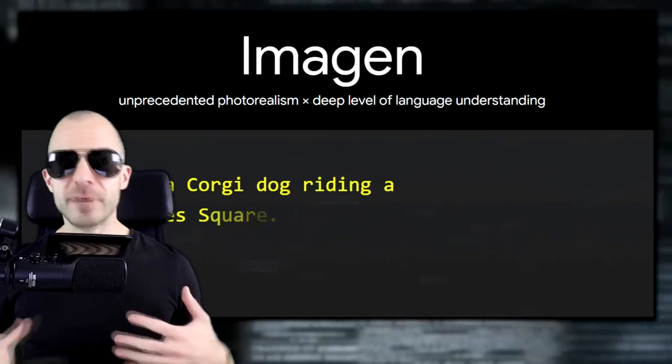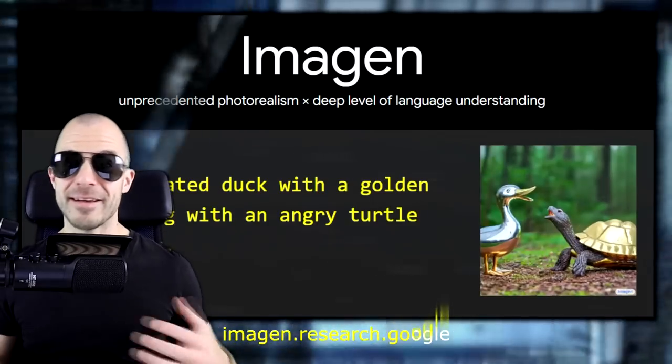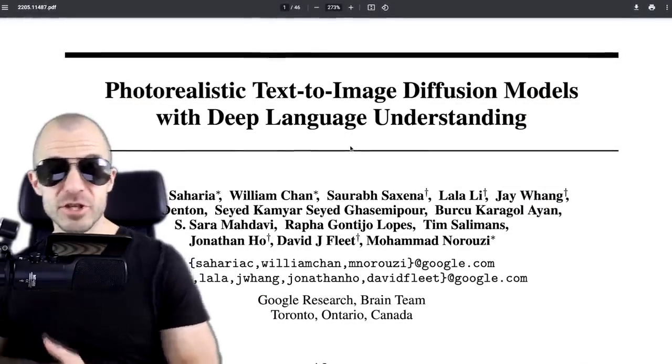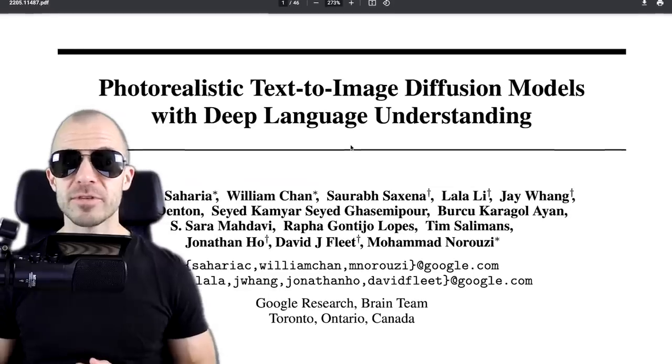At inference time, you run two generations in parallel from the same input noise — one conditioned on the text encoding, one not. At any intermediate step, you have a clear diff between the two. You can scale that diff up, pushing the generation toward more text conditioning. People find this increases how much the model pays attention to the text, though it comes with problems like more saturated pixels, pixels out of range, and less photorealism — which the dynamic thresholding helps address.